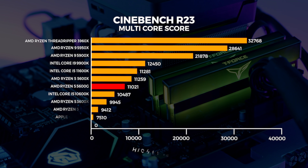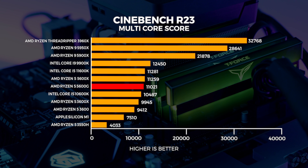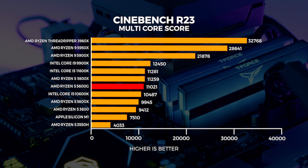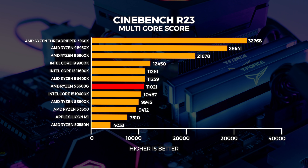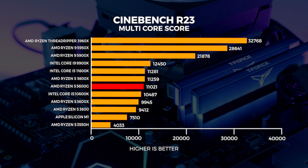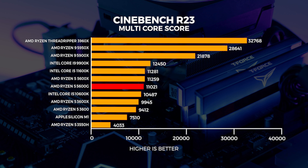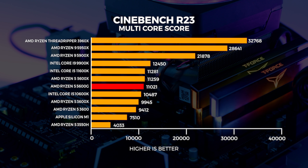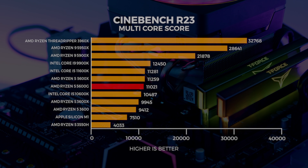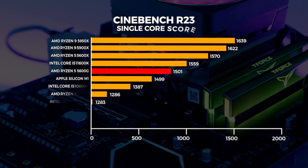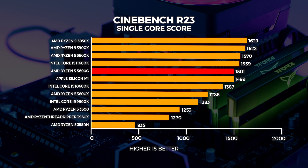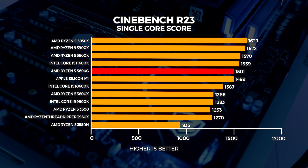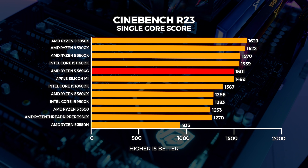Let's start off with Cinebench performance. We only tested with Cinebench R23, and we've used some historical data from our collection for comparison. From our testing in both multi-core and single-core, it's pretty clear that the 5600G is definitely not the fastest chip on the market — but if you're watching this video, I guess you already knew that anyway.